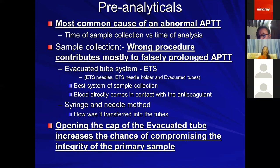If not using an evacuated tube system, take care to transfer the sample from syringe into the anticoagulant within one minute of the blood draw. Having an evacuated tube system does not guarantee a good sample if you open the cap. When we have an abnormal APTT, we generally call the blood-collecting system — from the ward or laboratory — to verify that the sample was collected properly.